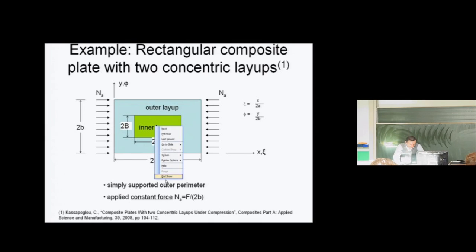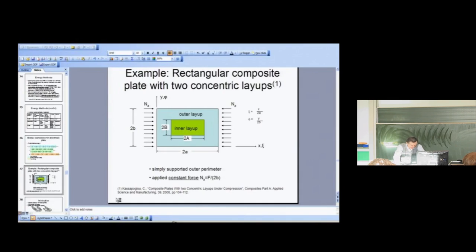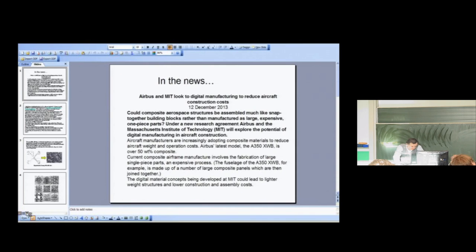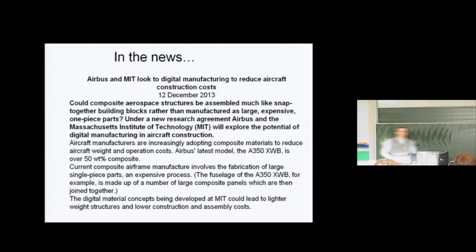We'll actually look at the news again. This goes back to December, but we'll eventually catch up with the news of today, but not today. Airbus and MIT look to digital manufacturing to reduce aircraft construction costs. That's great. Could composite aerospace structures be assembled much like snap-together building blocks? You know, it's my son's paradise. I mean, Legos.